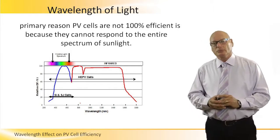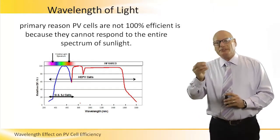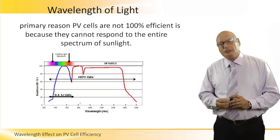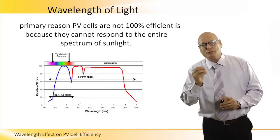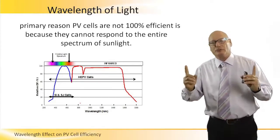Wavelength of light. The primary reason PV cells are not 100% efficient is because they cannot respond to the entire spectrum of sunlight.